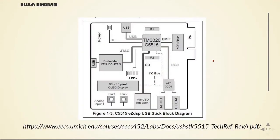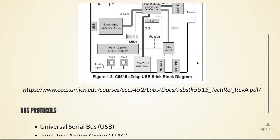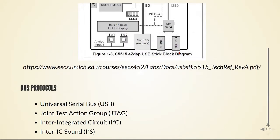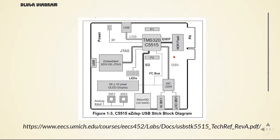And here's the block diagram of the board. So we have the processor here. We have this external memory interface to communicate with memory. We have here the USB port with this embedded XDS100 JTAG emulator. This is the JTAG bus here, and we are going to debug and program this processor using this JTAG interface. We have here the I2C bus to control the audio codec and the OLED display, and we have the I2S for audio signals from the audio codec and the C5515. We will talk about all these components and bus protocols in more detail.